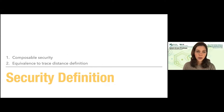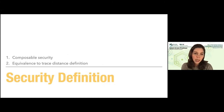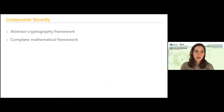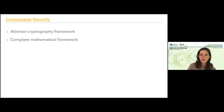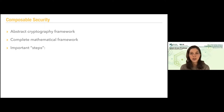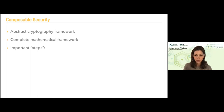We are going to use a framework called abstract cryptography. I'll show that it is equivalent to a different security definition which is very useful to use when we actually prove security. This is a complete mathematical framework — you can see in the references some links to the papers. There is also in the reference PDF a link to a tutorial given by Christopher Portman that explains these things in much more depth. So if you're interested, you can go and watch that tutorial as well.